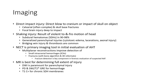Imaging: direct impact injury results from a direct blow to the scalp or impact on an object, causing a complex skull fracture and focal brain injury deep to the impact site. Shaking injury results from violent rotational motion of the head, causing subdural hematoma in 90 to 98 percent of cases, parenchymal injury, cytotoxic edema, laceration or axonal injury, bridging vein injury, and thrombosis.